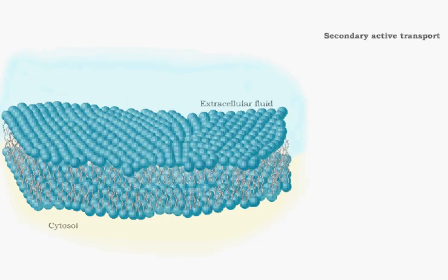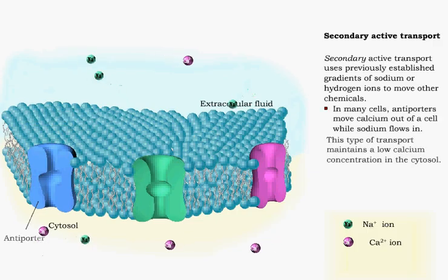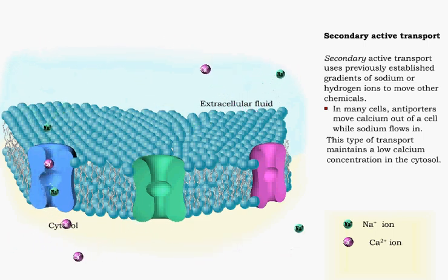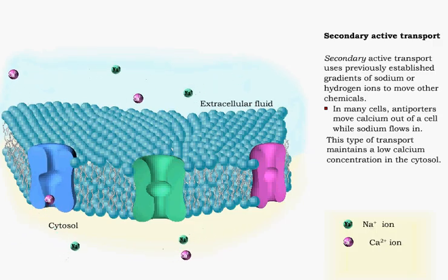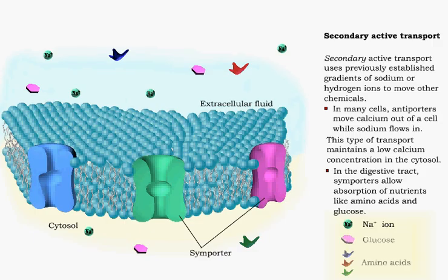Secondary active transport occurs when the concentration gradient of sodium or hydrogen ions produced by primary active transport drives the transport of another chemical. Low cytosolic calcium levels are maintained by secondary active transport. Another example of secondary transport is the absorption of nutrients from the digestive tract into intestinal cells.